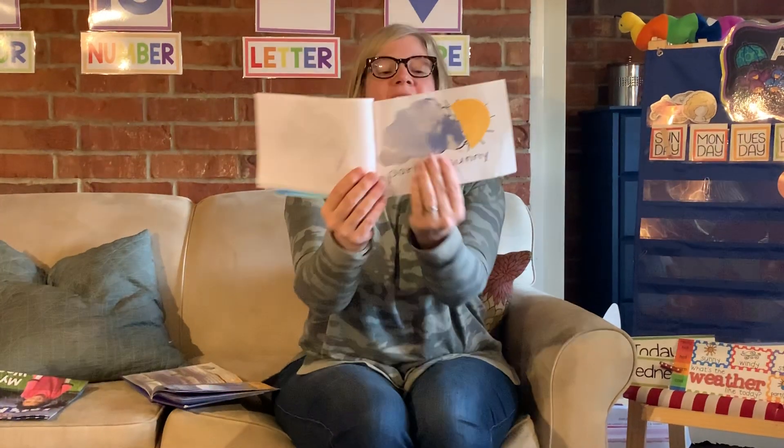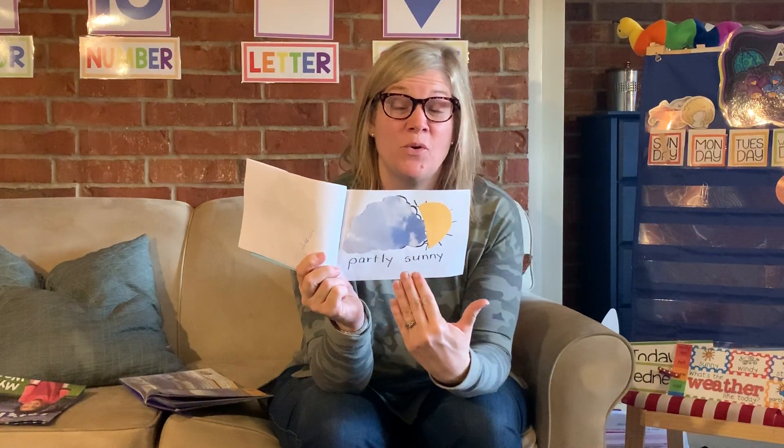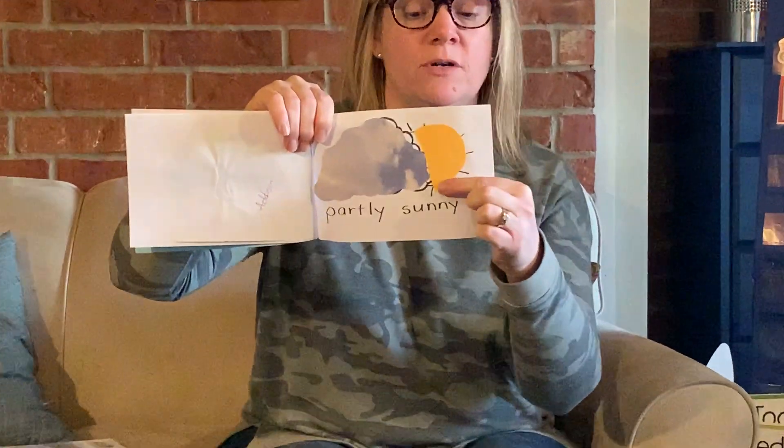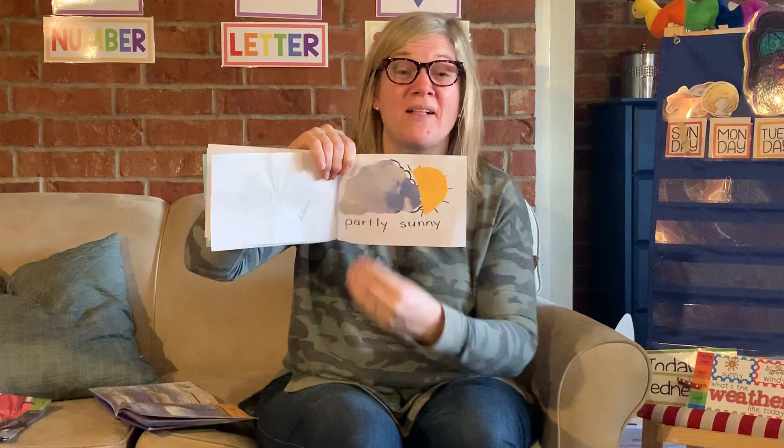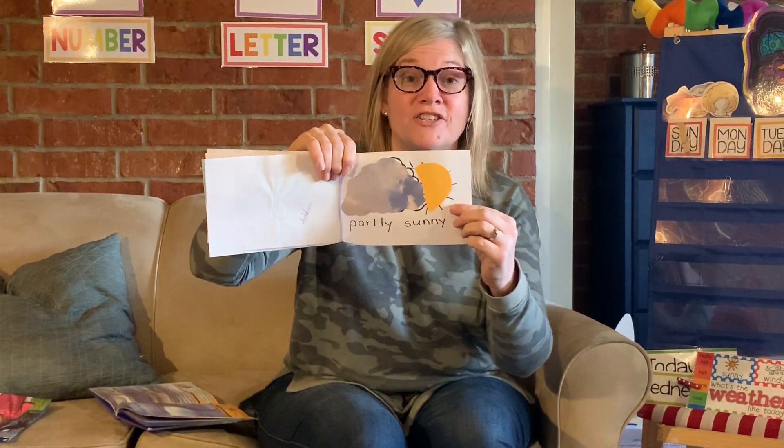The last page we're going to do is our partly sunny or partly cloudy page. What I like to do with my class is take a couple of cotton balls — I like to take three — and stretch them apart, then glue them on to the cloud and color our sun. Or if you want to get fancy, parents, you could do a piece of construction paper like Addison did. And that is our weather book.